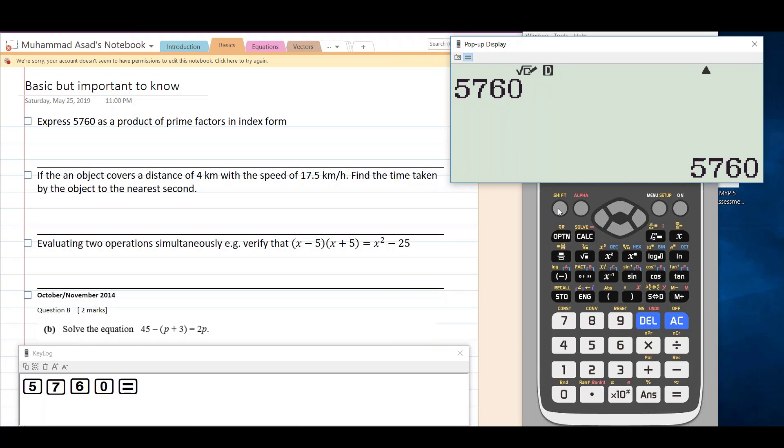After getting your answer, press shift and this FACT means factors button. Remember, whenever you have to use the functions with the yellow tags, you must press shift first. Now shift is pressed, you can see S is there.